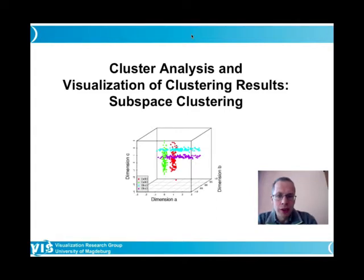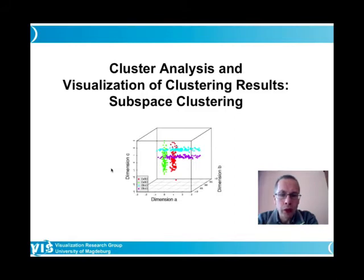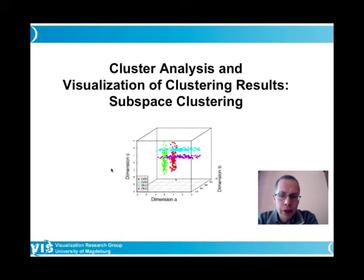The initial image shows a three-dimensional scatterplot with projections to two-dimensional subspaces: the AB, BAC, and BC subspaces. Four colors indicate four clusters — these are subspace clusters, occurring in two-dimensional subsets of this three-dimensional set. The goal is to find subspaces where clustering is meaningful, cluster within them, and visualize the results — including different subspaces and overlapping subspace clusters.